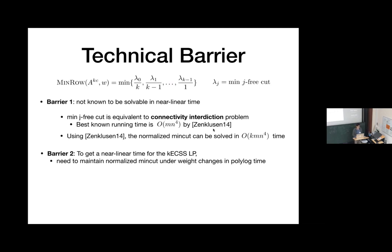Using the interdiction algorithm gives a runtime of K·MN to the fourth, which is not the near-linear time we want. Furthermore, this is even for the static setting. Barrier number two is that to get near-linear time, we also need a dynamic algorithm that maintains the normalized cut oracle under weight changes in poly-logarithmic time — which sounds extremely difficult.